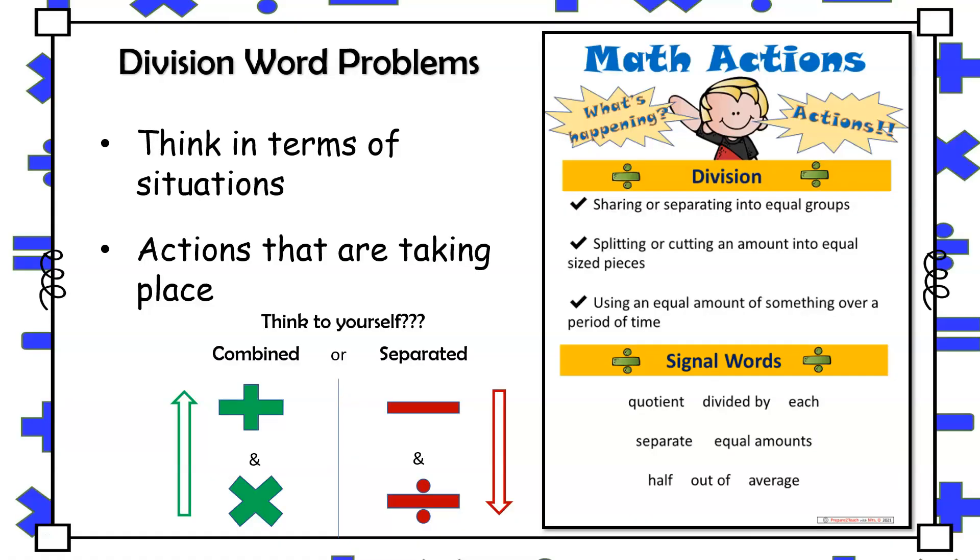Overall, students must have a good understanding of the context, what's happening in the word problem. Being able to recognize when objects are being combined and separated, and that with division more specifically, a total is already given and either the total number of groups or the number in each group needs to be determined.